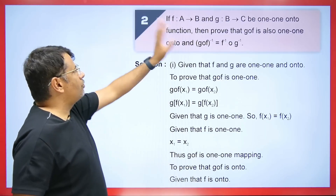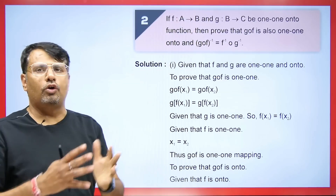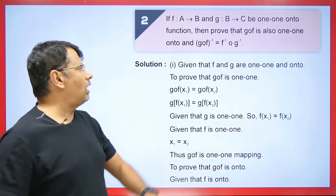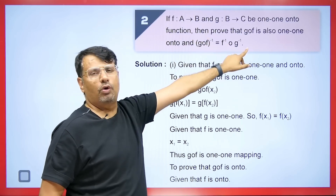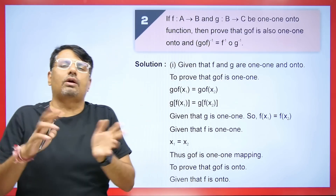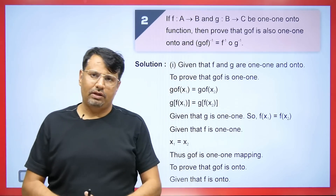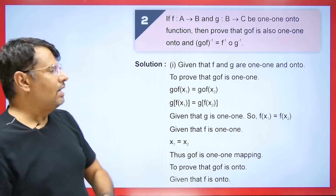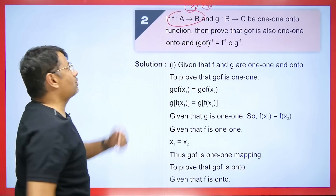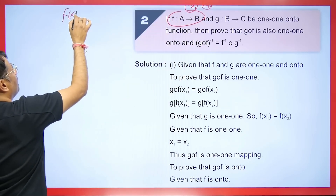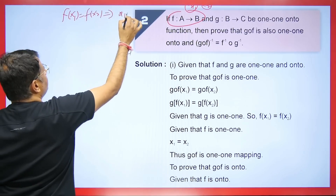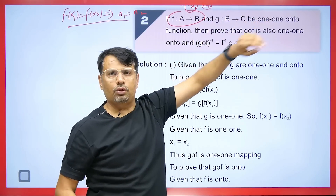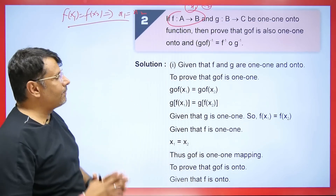Now look at this question: Let F: A → B and G: B → C be one-to-one and onto functions. We need to prove that G∘F is one-to-one and onto, and that (G∘F)⁻¹ = F⁻¹∘G⁻¹. First, let's prove G∘F is one-to-one. By definition, if F(X1) = F(X2) implies X1 = X2, and if G(X3) = G(X4) implies X3 = X4, then we prove G∘F is one-to-one.